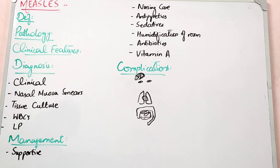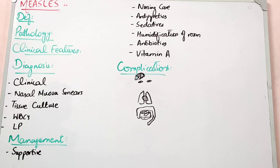For MCQs, the scenario will tell you that a baby presented with high-grade fever for the last 2-3 days. He has a rash which started behind the ear and then spread to the whole body. He also has symptoms of cough and conjunctivitis. You will be asked what kind of rash it is — erythematous, macular, pustular, or maculopapular?